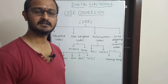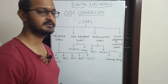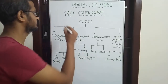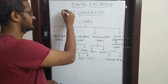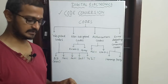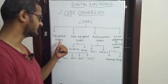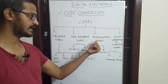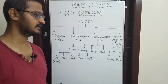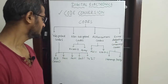Hi friends, in this video we will start the whole topic in Digital Electronics. The topic is Code Conversion. Codes are 4 types: Weighted Codes, Non-weighted Codes, Alphanumeric Codes, and Error Correction and Error Detecting Codes.